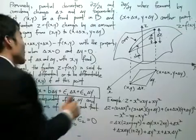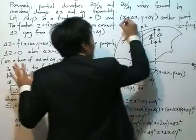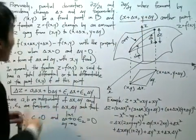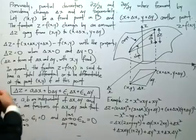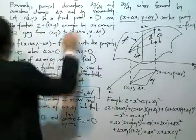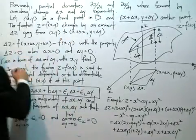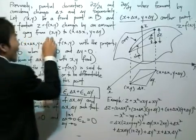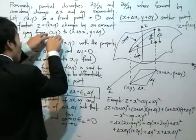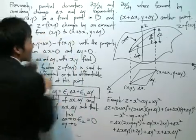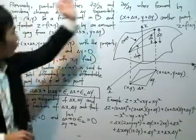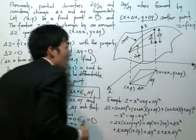D is the x-y plane. We're now changing both our variables x and y simultaneously. The function z changes by an amount delta z, going from the point (x, y) to (x + Δx, y + Δy). Let's go to the diagram to see what I mean.